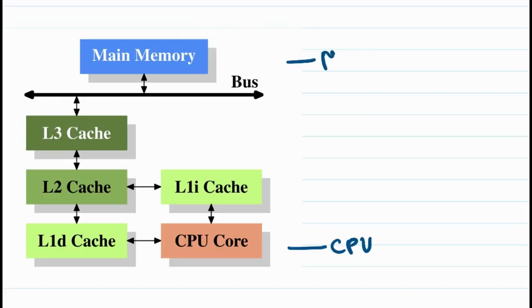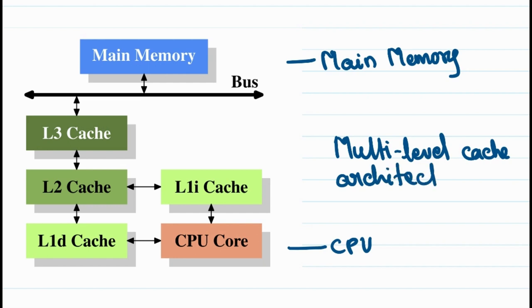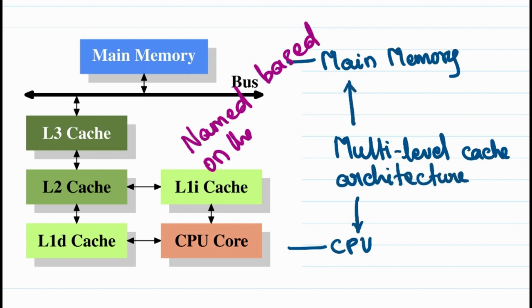This is a typical system architecture. There is going to be multiple levels of cache between the CPU core and the main memory. These caches are named based on the level they are set. Usually, instruction cache and data cache are separate.